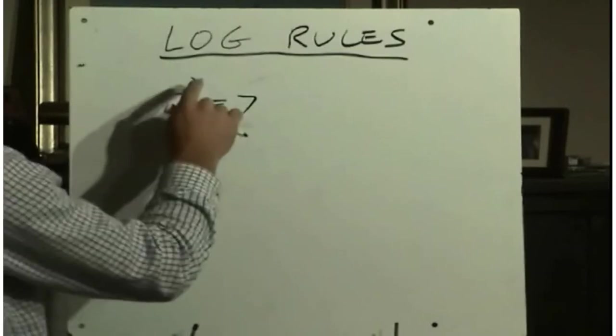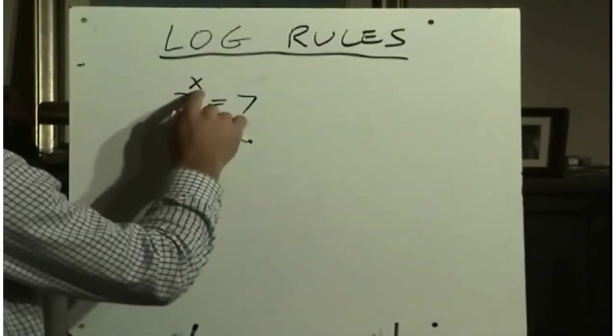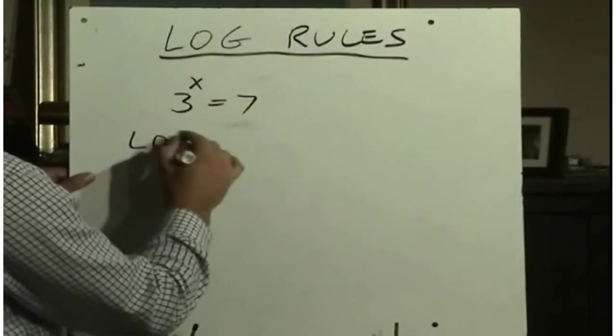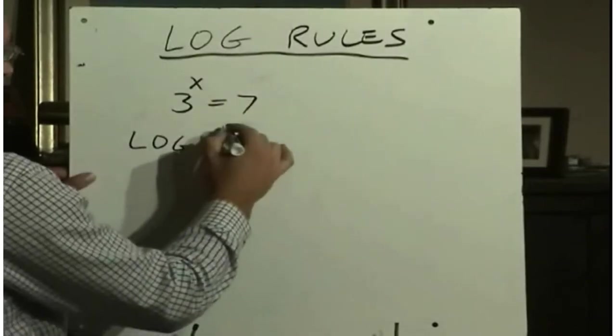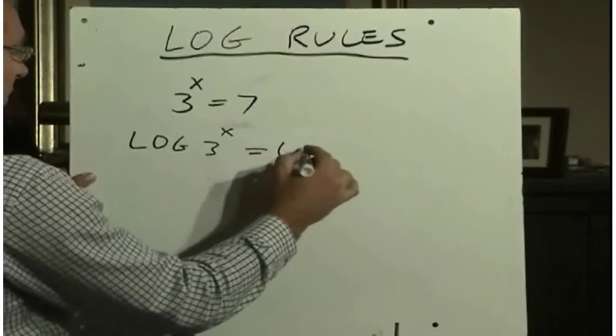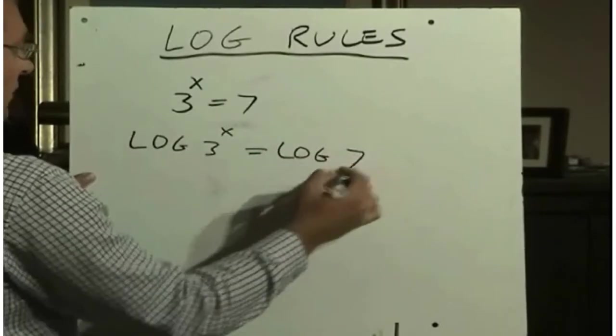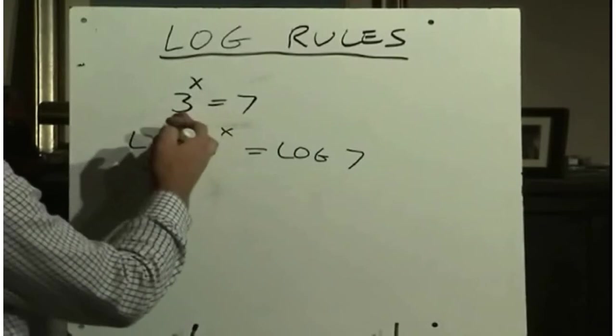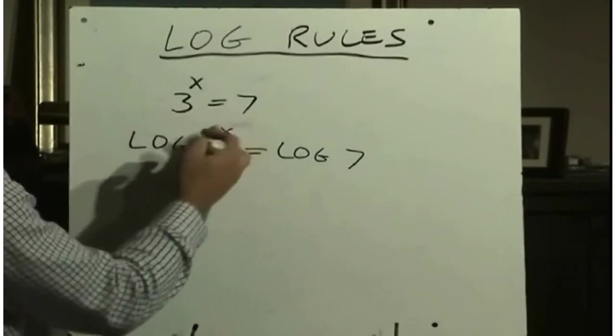Eventually you might get close to what the solution is. But any time our variable is an exponent, any time the variable is an exponent, we will take the logarithm of both sides. So we're going to take the log of the left side, log of the right side. You remember the rules of equation? We're allowed to do the same thing to one side as long as we do it to the other side.